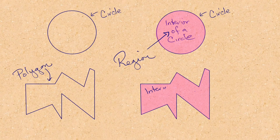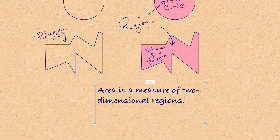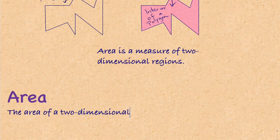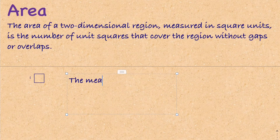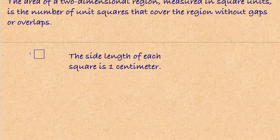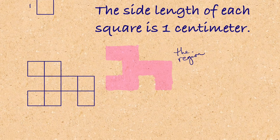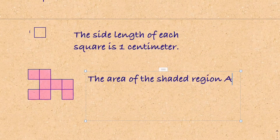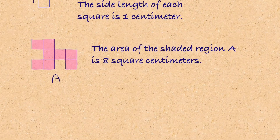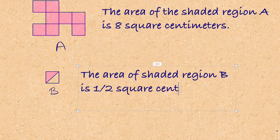When you have a two-dimensional shape like a polygon or circle, we can measure that interior using something called area. The next word is 'area.' The area of a two-dimensional region, measured in square units, is the number of square units that cover the region without gaps or overlaps. The side length of each square in this polygon is one centimeter. If you count the square centimeters, there are one, two, three, four, five, six, seven, eight — eight square centimeters. We also have a small triangle, and that's half a square unit, so we get a fractional amount: half a square centimeter.